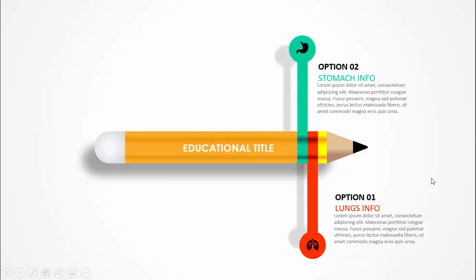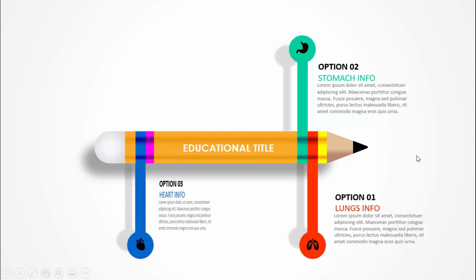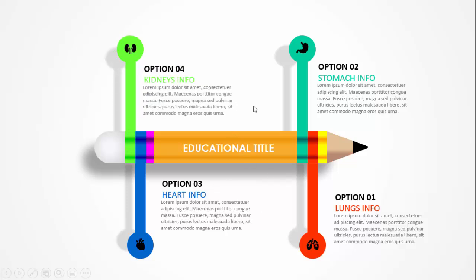When I click with a different color combination, the second option comes — I've provided the stomach info. Then comes the third one which is the heart, and the fourth one is the kidneys. This is a completely editable slide — you can change the text as per your requirement. I've provided two slides: one with animation and another without animation, so depending on your requirement you can choose.